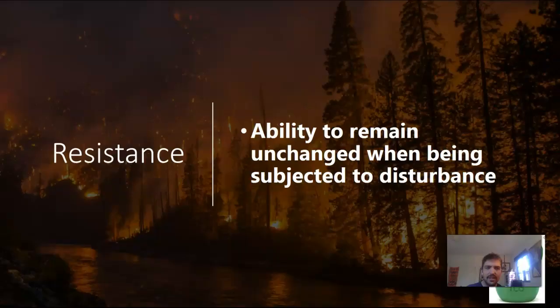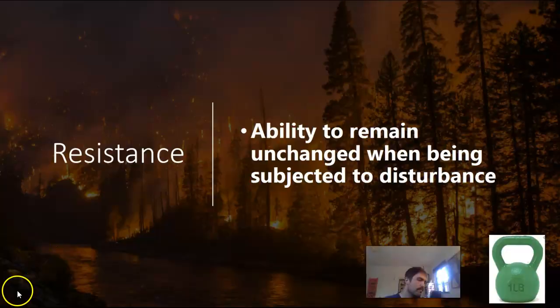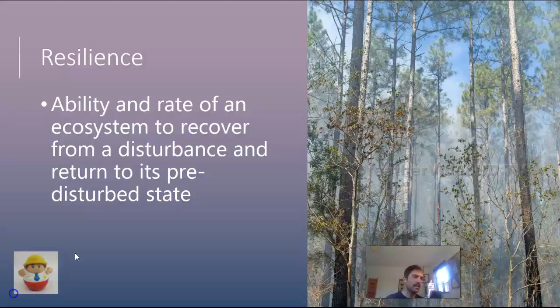The first response is resistance — the ability to remain unchanged when subject to a disturbance. You could think of it like a heavy weight: you try to push it over and it just doesn't change much. The second is resilience — the ability and rate at which an ecosystem recovers from a disturbance and returns to its pre-disturbed state. Think of a weeble wobble: it gets pushed over but pops right back up. Resistance means it's not easily affected; resilience means many disturbances can happen and it comes right back.